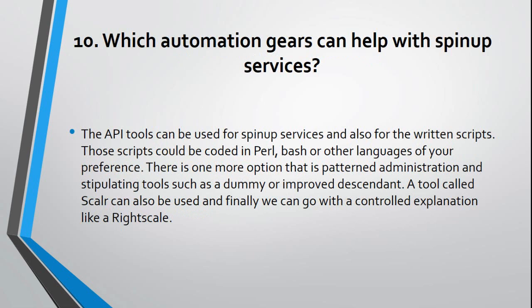Question 10: Which automation tools can help with spin-up services? The API tools can be used for spin-up services and also for written scripts. Those scripts could be coded in Perl, Bash, or other languages of your preference. There is one more option: pattern administration and provisioning tools such as Puppet or its improved descendants. A tool called Scalr can also be used, and finally we can go with a managed solution like RightScale.